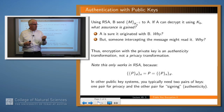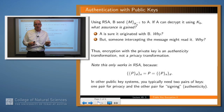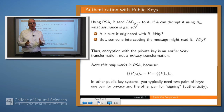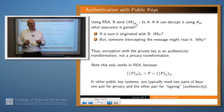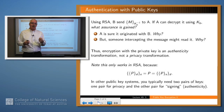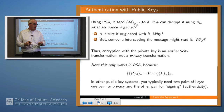Encryption with a private key is an authenticity transformation, but not a privacy transformation. Remember, encrypting with a private key and decrypting with a public key actually only works in RSA. In most other public key algorithms, you need two sets of keys — one for authenticity or signing, and the other for privacy.